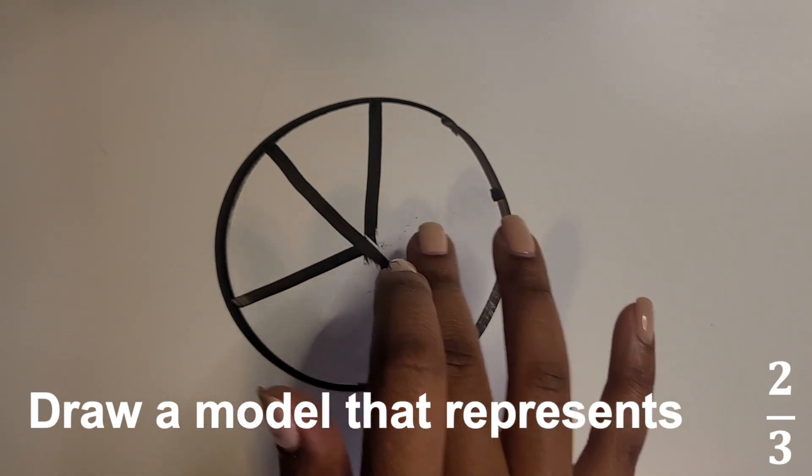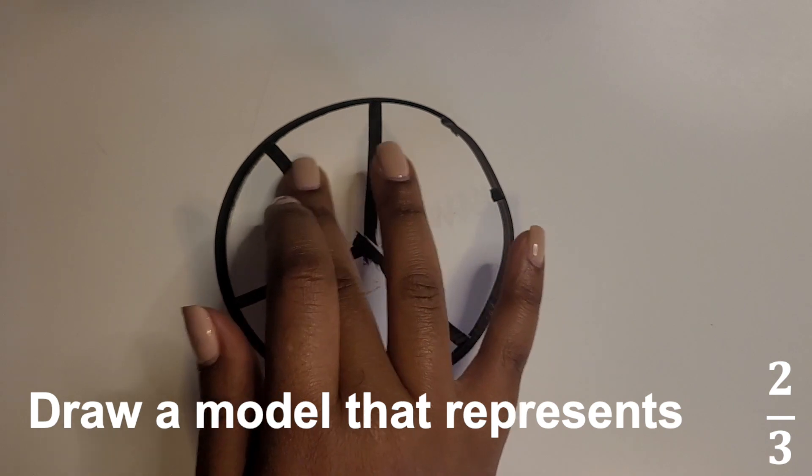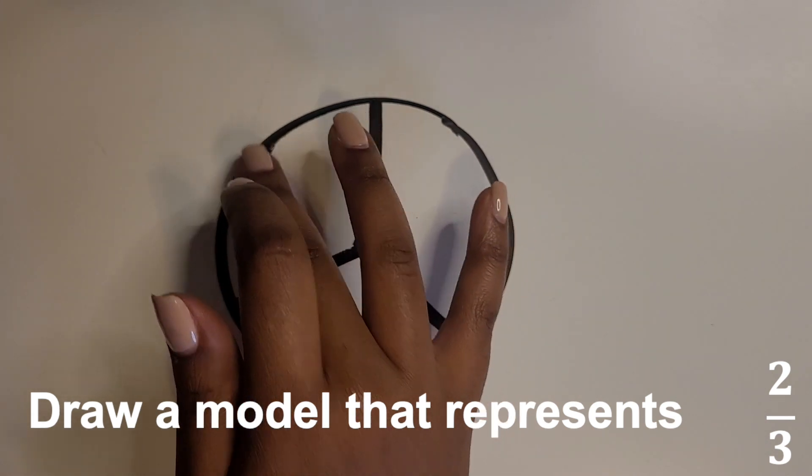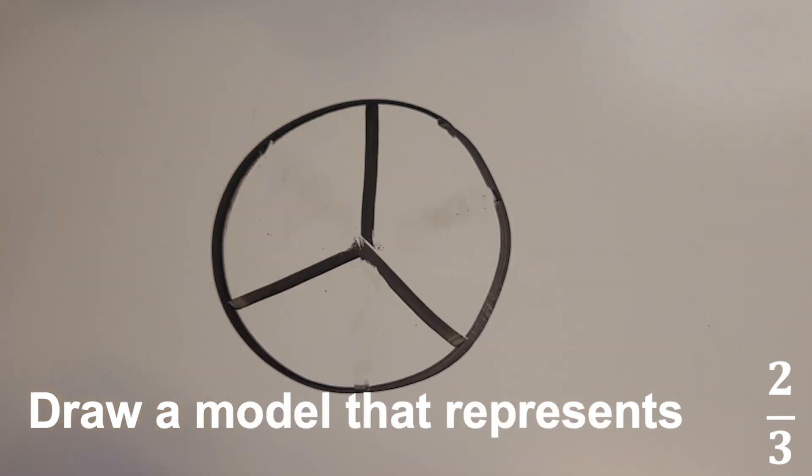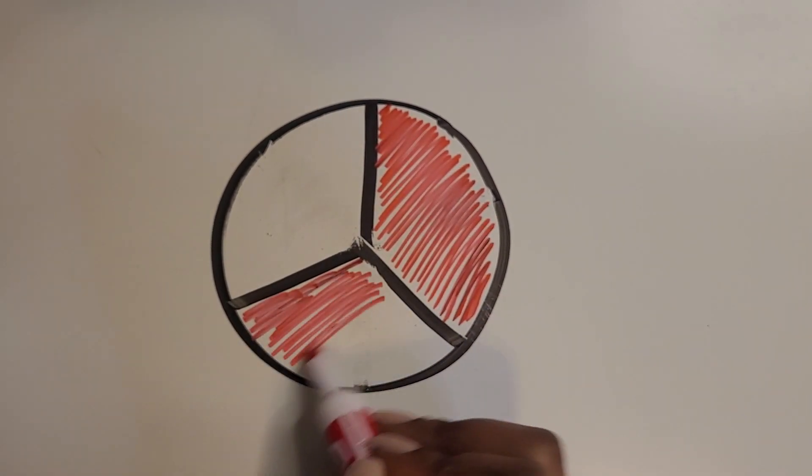Another thing to think about is drawing the P sign. If your students know what the P sign looks like, that's another example or a way to draw thirds in a circle. Then shade in two of those thirds to represent the fraction two thirds.